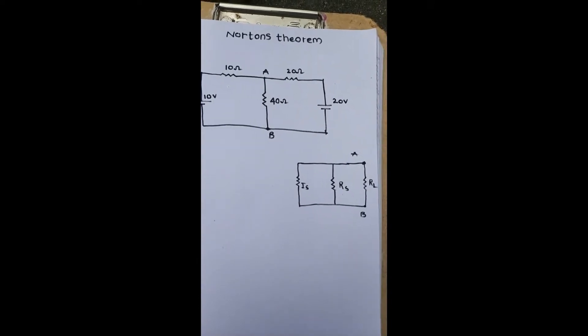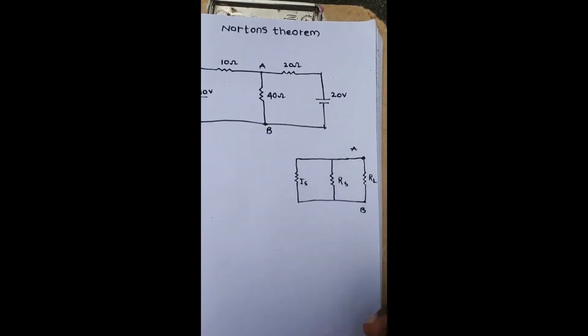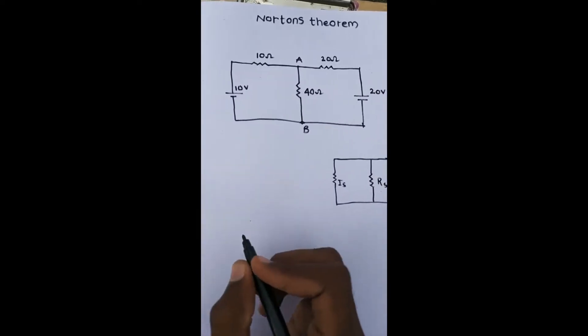So step one: find the Is value, and then find the Rs value, and then we can apply that to RL. That means VL and RL we can find.